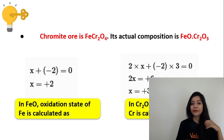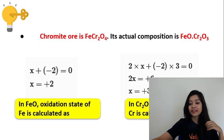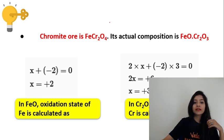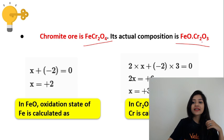Chromite ore - what is the chromite ore? FeCr2O4. This is the formula. If we look at the actual composition, what is it? FeO.Cr2O3.